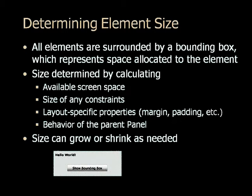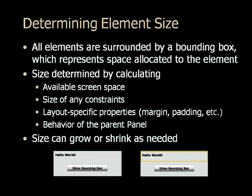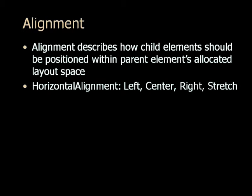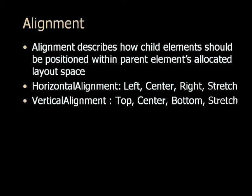Here's a simple example of a text block and a button, with the yellow area showing the bounding box for the text block — the available space for that element in the window. Alignment tells you how child elements should be positioned within the allocated layout space in the parent element. For example, in a stack panel with buttons inside, alignment controls how those buttons are positioned given the available space. You control this by setting the horizontal alignment or vertical alignment properties. Horizontal alignment can be left, center, right, or stretch. Vertical alignment can be top, center, bottom, or stretch.